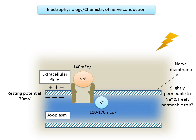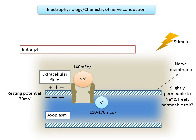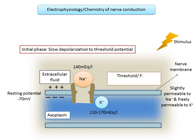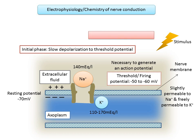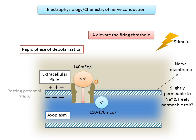A stimulus excites the nerve, leading to an initial phase of slow depolarization — the electrical potential within the nerve becomes slightly less negative. A decrease in negative transmembrane potential of 15 millivolts, for example from minus 70 to minus 55 millivolts, is necessary to reach the firing threshold. In a normal nerve, the firing threshold remains constant. Exposure of the nerve to a local anesthetic raises its firing threshold. When the firing threshold is reached, membrane permeability to sodium increases dramatically and sodium ions rapidly enter the axoplasm. During depolarization, a major portion of ionic sodium channels are found in their open (O) state, permitting the rapid influx of sodium.